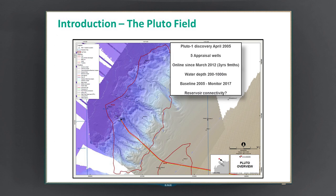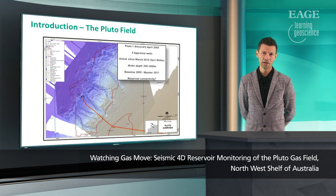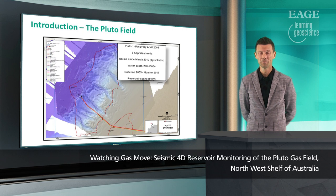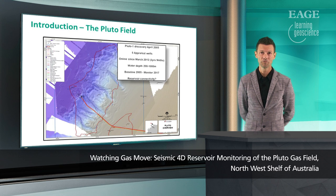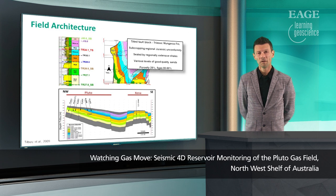The Pluto field was first discovered in April 2005 and consists of five appraisal wells, three in a crescent position, one to the north and one to the south. The field had been online since March 2012, which is only three years and nine months after the startup. The water depths straddle a broad range from 200 meters to 1,000 meters and are clearly defined by a series of canyons that cut through the continental shelf. The baseline is a 2005 vintage, and the monitor was first shot in 2017. The main issue we're trying to address with the program is the reservoir connectivity across the fluvial sands that define the Pluto field itself.